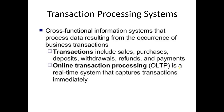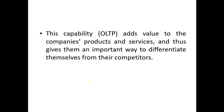Transaction processing systems (TPS) are cross-functional information systems that process data resulting from the occurrence of business transactions. Transactions include sales, purchases, deposits, withdrawals, refunds and payments. Online transaction processing (OLTP) is a real-time system that captures transactions immediately. OLTP adds value to a company's products and services and gives them an important way to differentiate themselves from competitors, providing a competitive advantage.